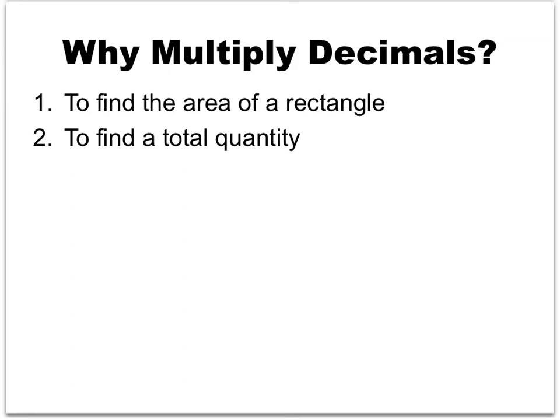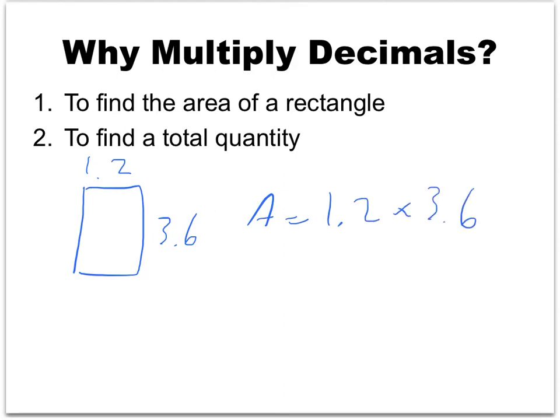The third question we asked is why would we multiply decimals in the first place? There are at least two reasons. The first is to find the area of a rectangle — area equals width times height. We justified that with whole numbers, but it applies to decimals and fractions too. For instance, a rectangle that's 1.2 by 3.6 inches has area 1.2 times 3.6.